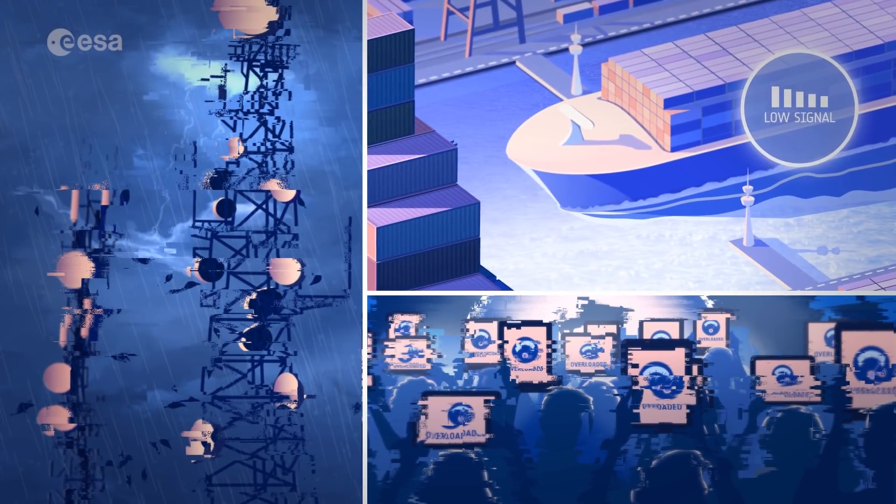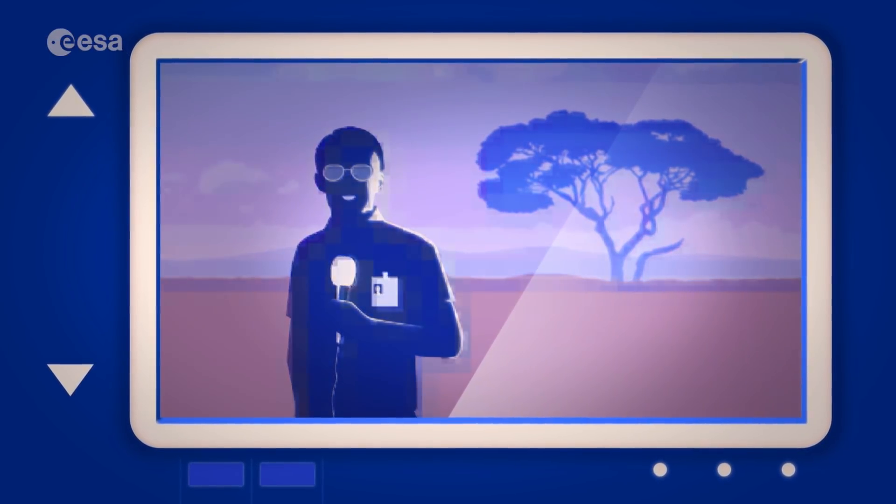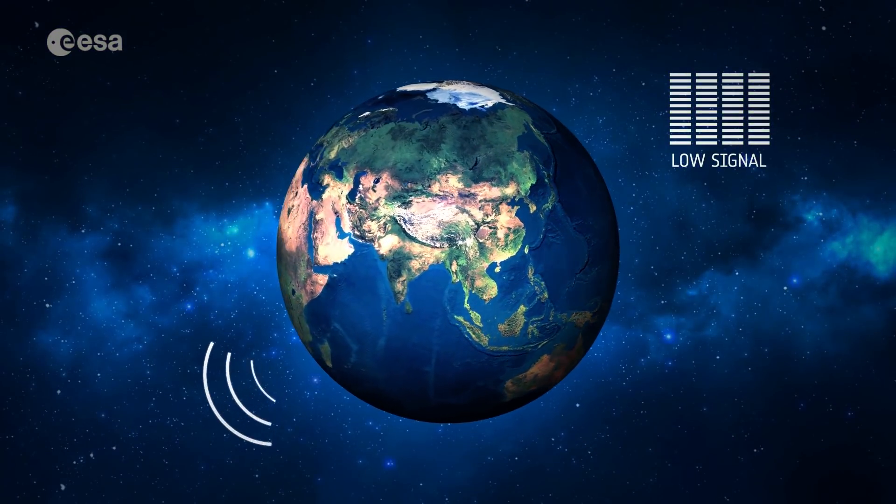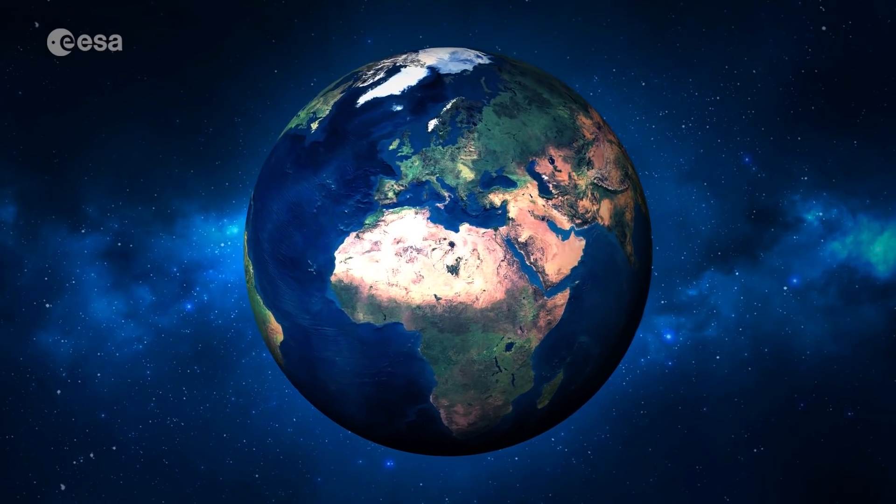will need uninterrupted coverage at unprecedented capacity, which terrestrial networks alone can't guarantee. The connection can be blocked by buildings, weaken in low coverage areas, or not exist at all.